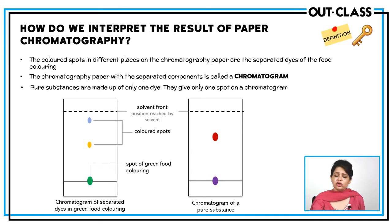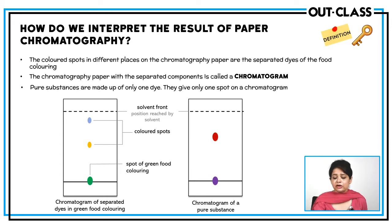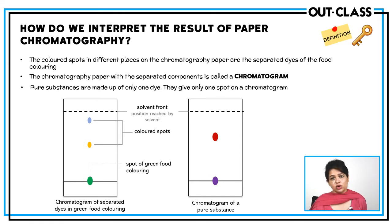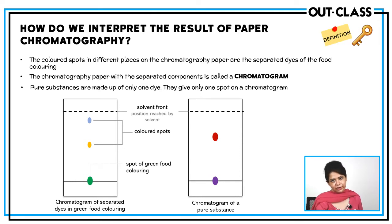If we obtain two spots, it means the green colour is made up of two colours — blue and yellow. If we obtain only one spot, it means what you used was not a mixture but a pure substance. Pure substances produce only one spot on the chromatogram.